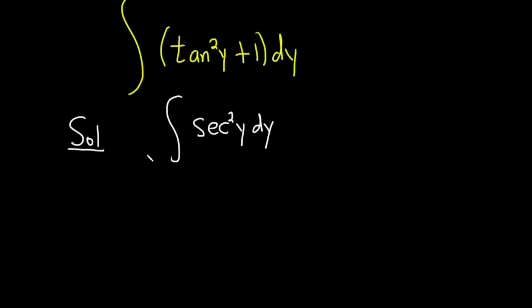And this is much better because now when you're integrating this, you're asking the question, what is a function whose derivative is secant squared? Well, the derivative of tangent is secant squared. So this is going to be equal to tangent of y plus our constant of integration, capital C.